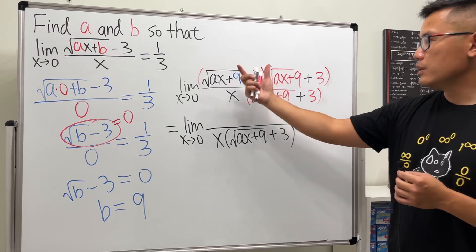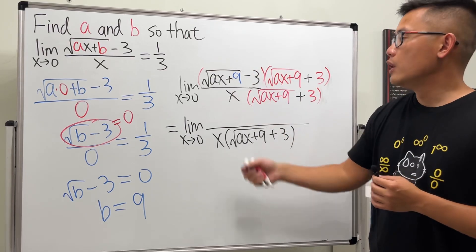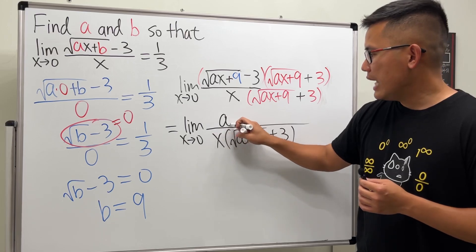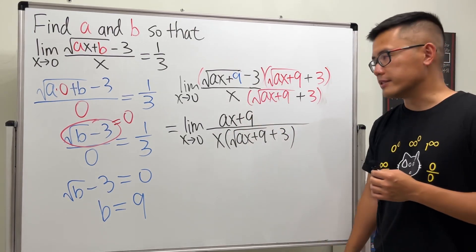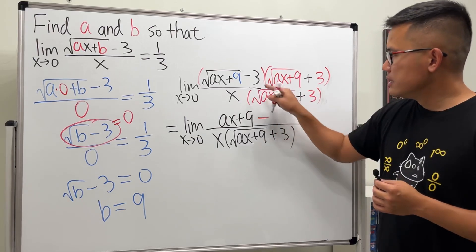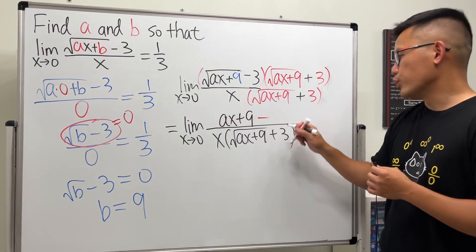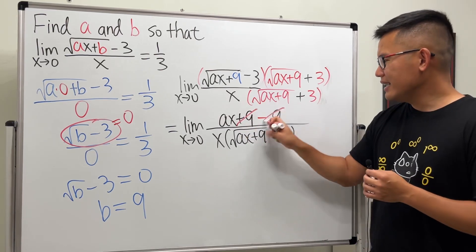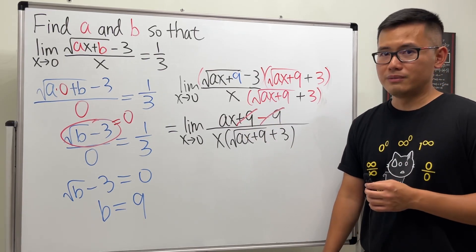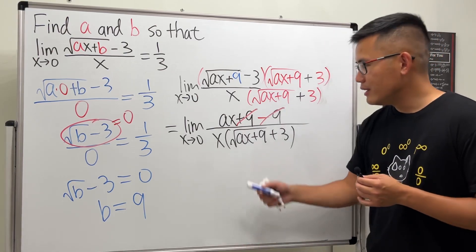Keep the bottom: we have x times the square root of ax plus nine, and then plus three. But then for the top, this is like A minus B times A plus B, so it's the difference of two squares. We just square this, so we will get ax plus nine—right, because the square and square will cancel—and then minus this square, and three square is equal to nine.